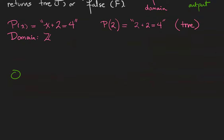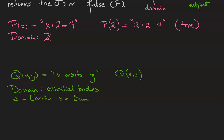Another example is the predicate Q of x, y. Predicates can have two subjects where Q of x, y means x orbits y. I'm going to talk about celestial bodies, things like the Sun and the stars and the planets. Let's let e refer to the Earth, and let's let s refer to the Sun. Then the statement Q of e s is the statement the Earth orbits the Sun, which is true.